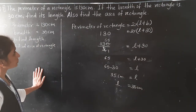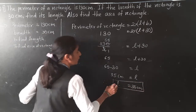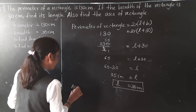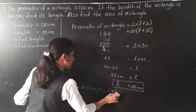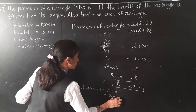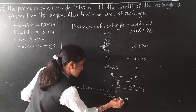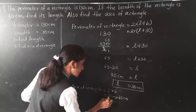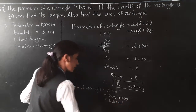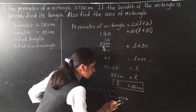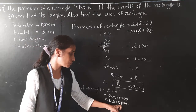Now find the area of the rectangle. Area of rectangle equals length multiplied by breadth, so 35 multiplied by 30. 3 fives are 15, 3 threes are 9 plus 1 carry is 10. Area of rectangle is 1050 square centimeter.